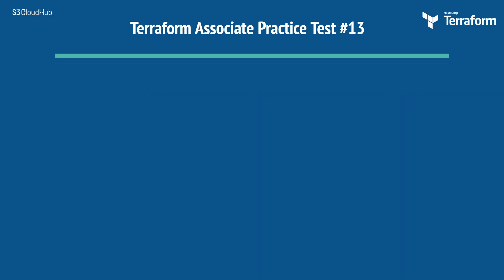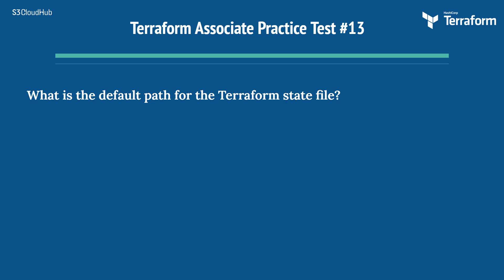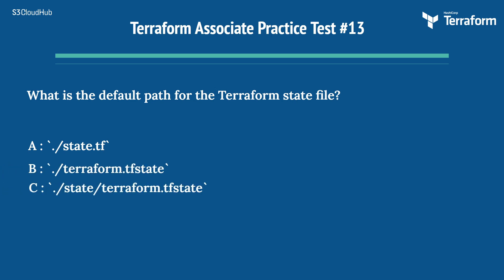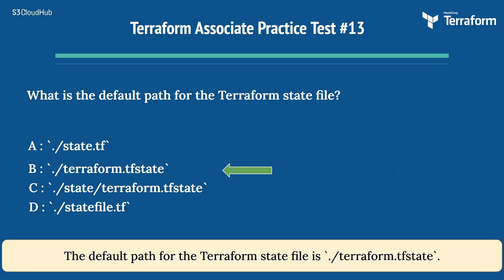The thirteenth question is: what is the default path for the Terraform state file? Option A: state.tf. Option B: .terraform.tfstate. Option C: state/terraform.tfstate. Option D: statefile.tf. The right answer is Option B: .terraform.tfstate. The default path for the Terraform state file is .terraform.tfstate.